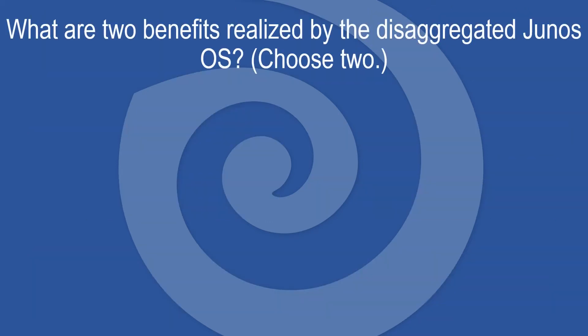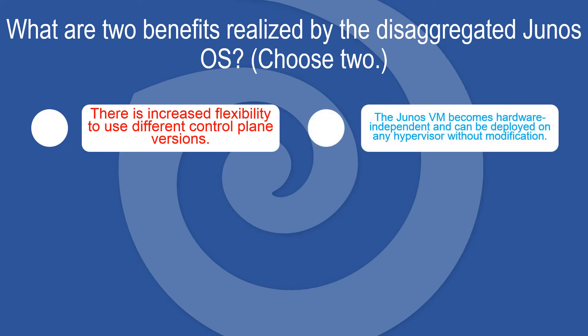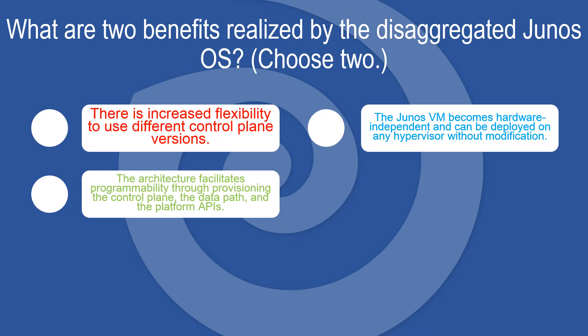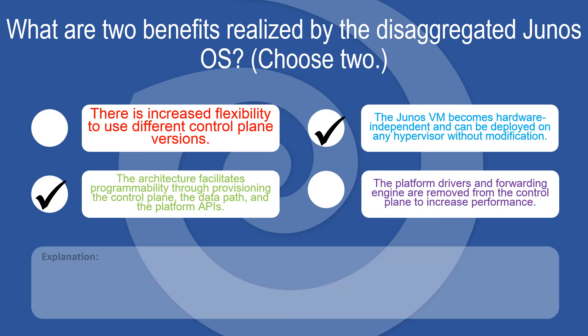What are two benefits of the disaggregated Junos OS? Choose two. There is increased flexibility to use different control plane versions. The architecture facilitates programmability through provisioning the control plane, the data path, and the platform APIs. The platform drivers and forwarding engine are removed from the control plane to increase performance.